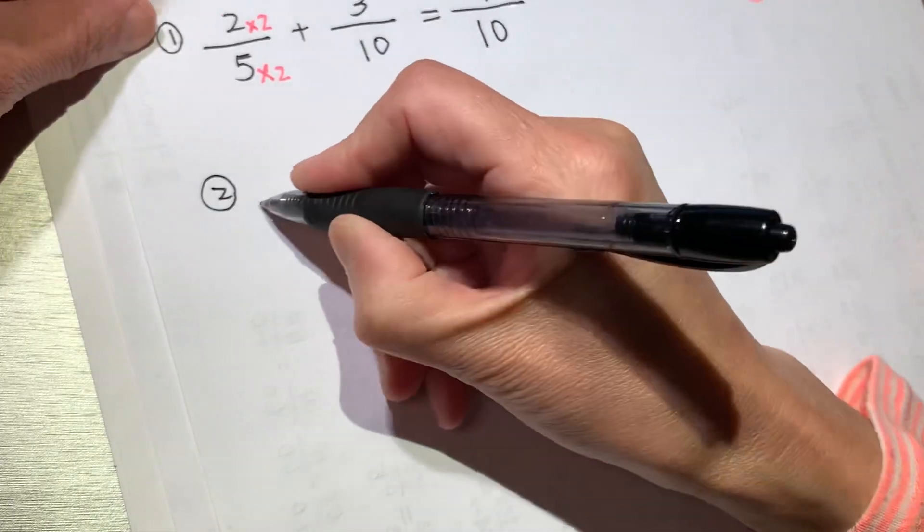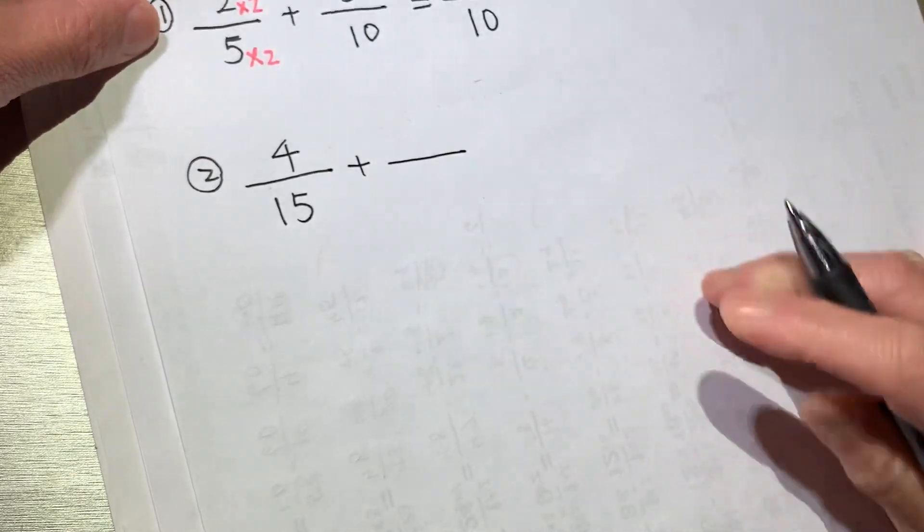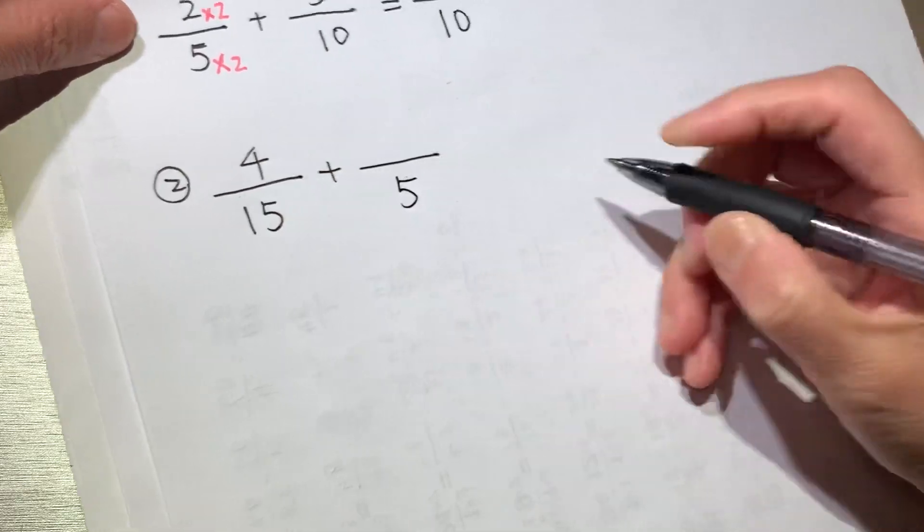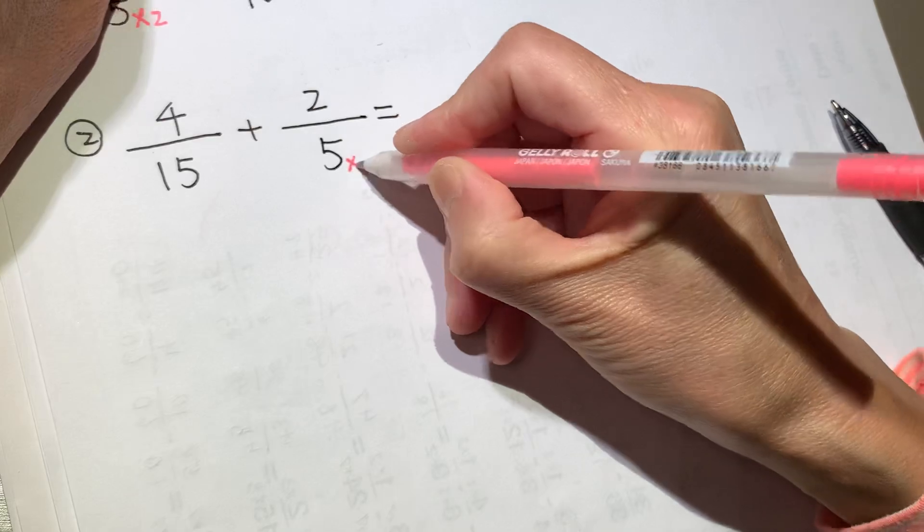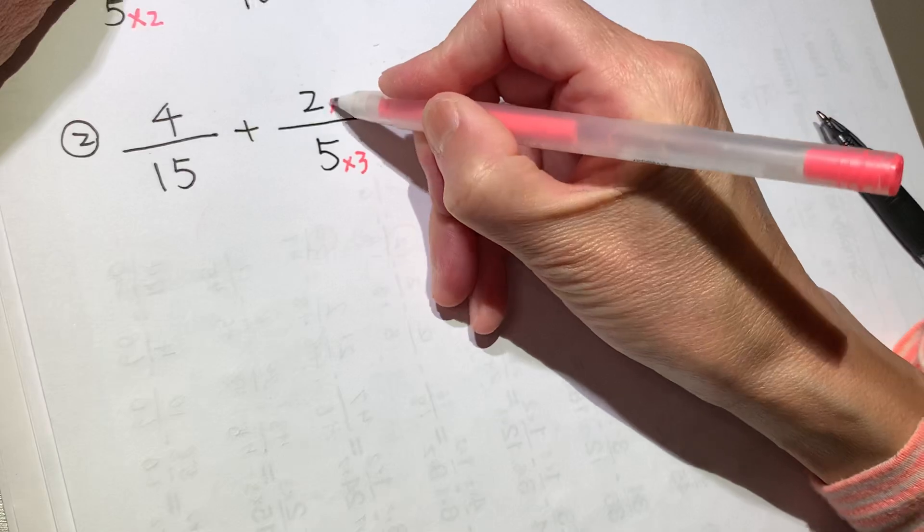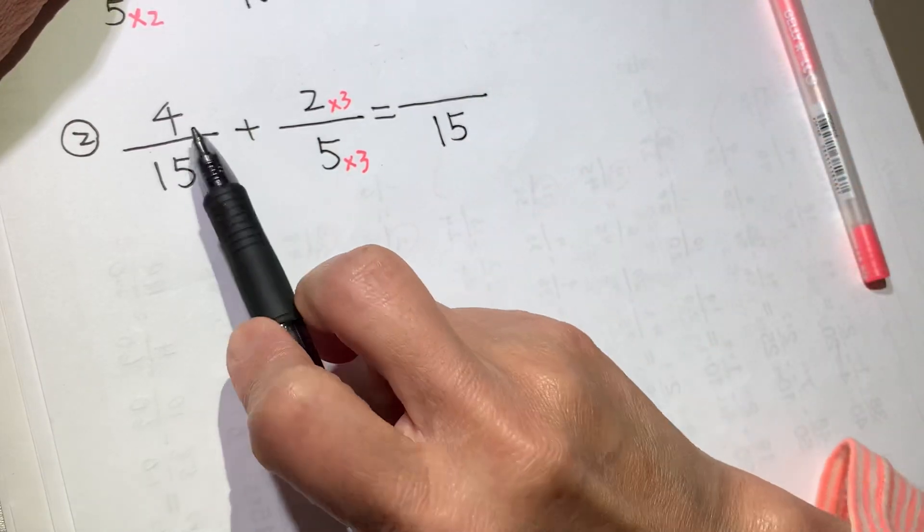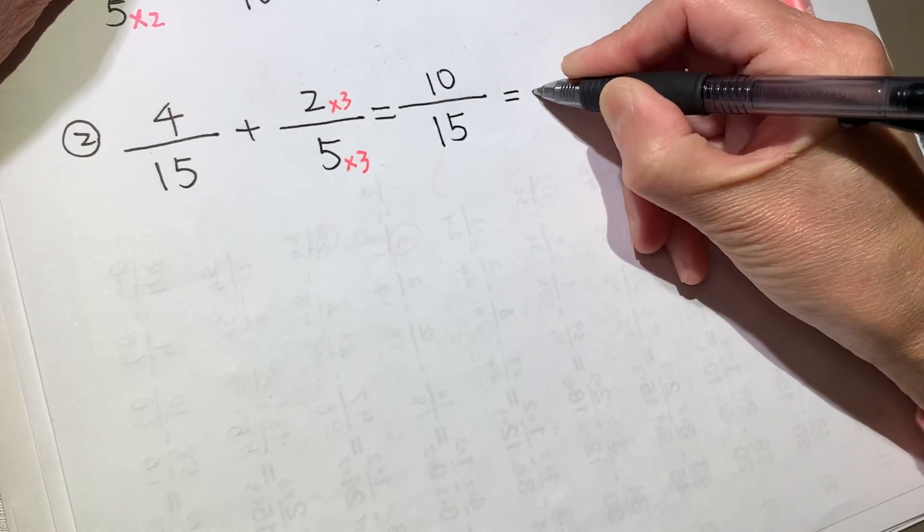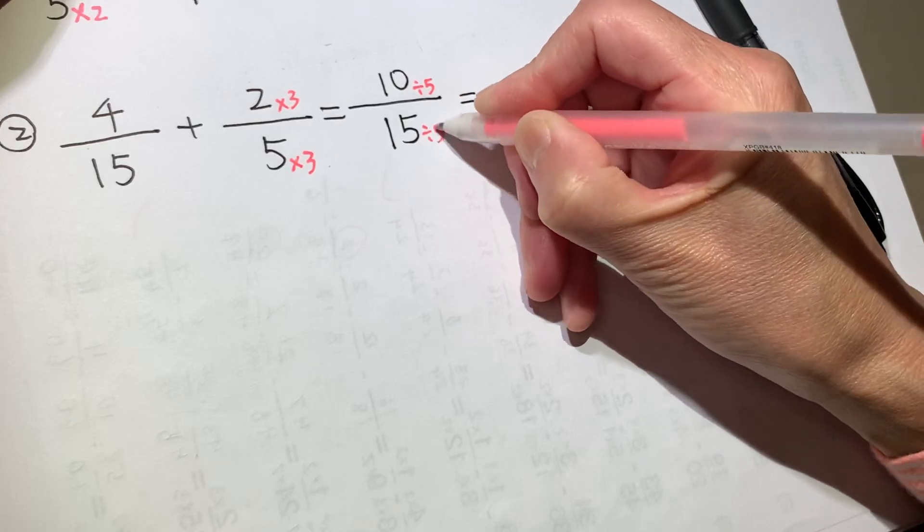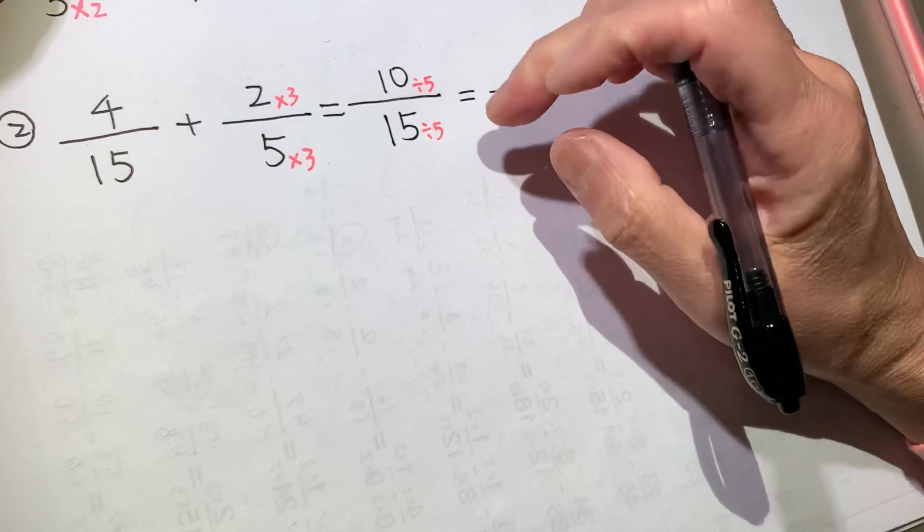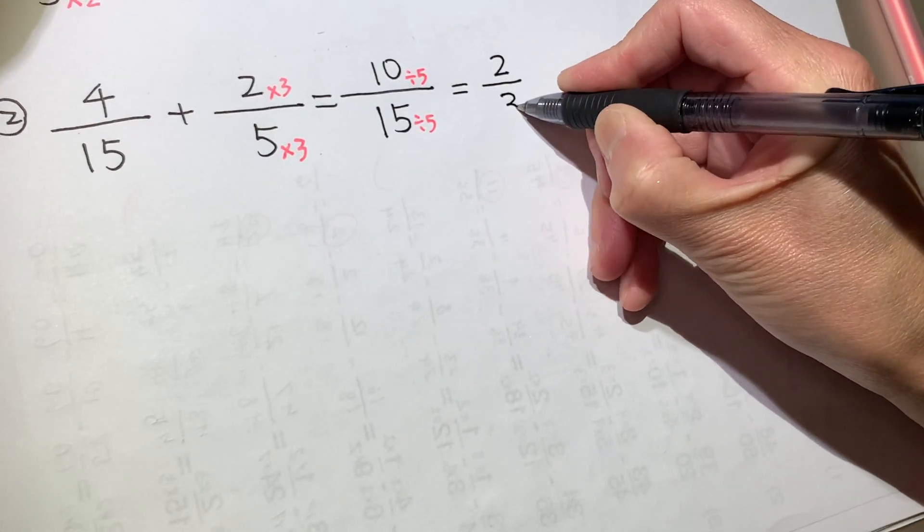Question number 2. 4 over 15 plus 2 over 5. So 15 and 5, you need to times one number. 5 times 3 is 15. Bottom times 3, top times 3. So the result is, denominator is 15, 4 plus 6 is 10. Now we can simplify it, both divided by 5. So 10 divided by 5 is 2, 15 divided by 5 is 3.